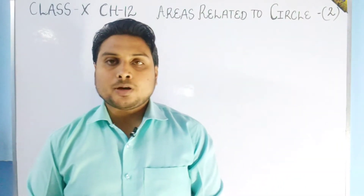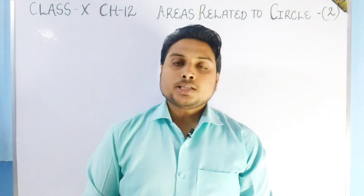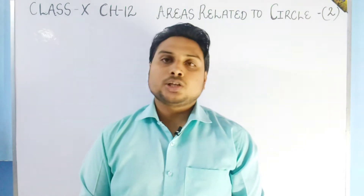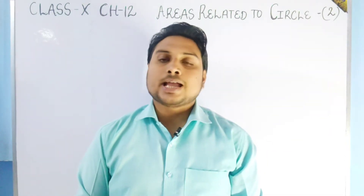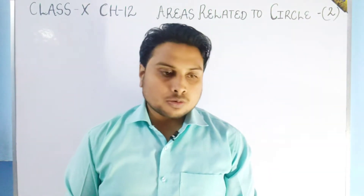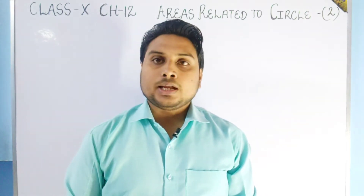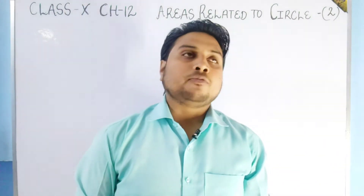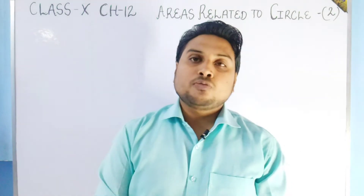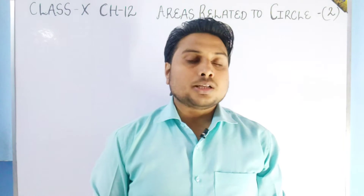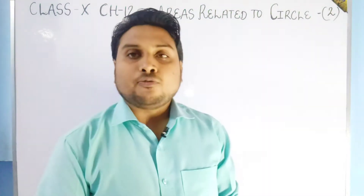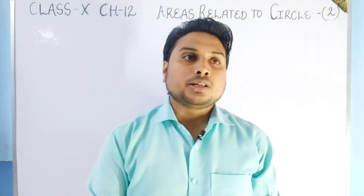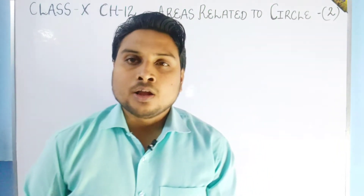Welcome to the second part of chapter 12, Areas Related to Circles. In the last part of the video, we covered the basics of circles: definition, circumference, radius, diameter, and area. We also explained the areas of parts of a circle like semicircles and quadrants, the area of concentric circles, and results when two circles touch internally or externally. We also discussed the formula for how many revolutions a rotating wheel makes per minute.